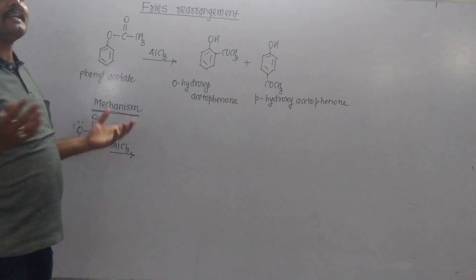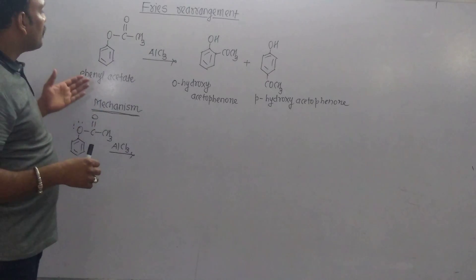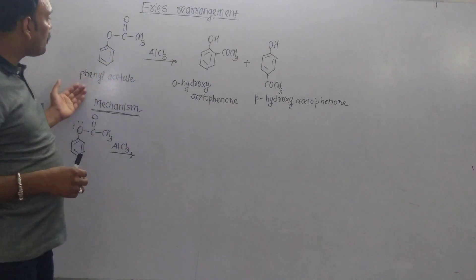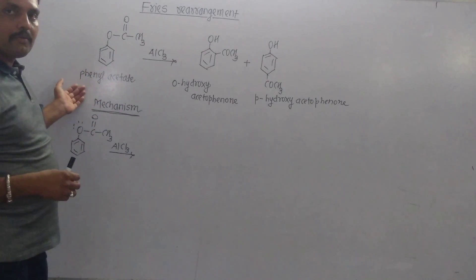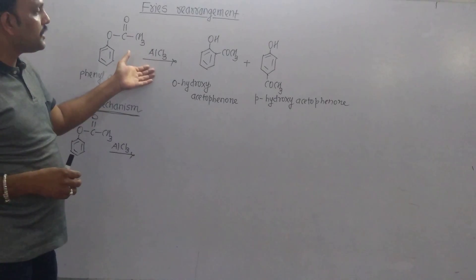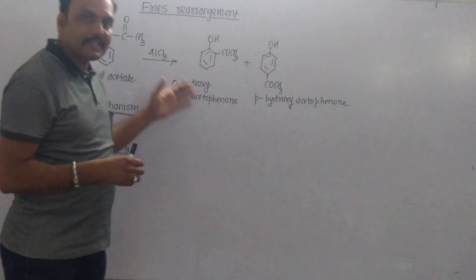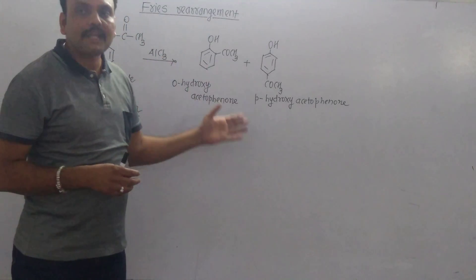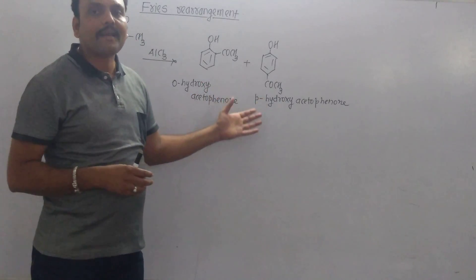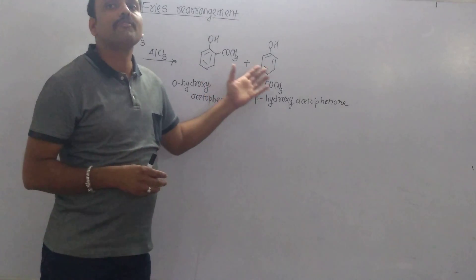Consider one example: phenyl acetate, which is an aryl ester. When treated with AlCl3, we receive ortho-hydroxyacetophenone and para-hydroxyacetophenone.